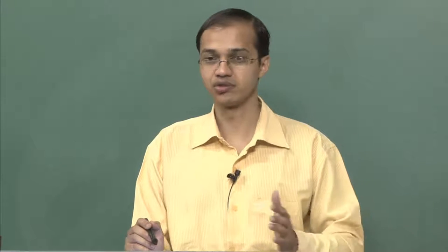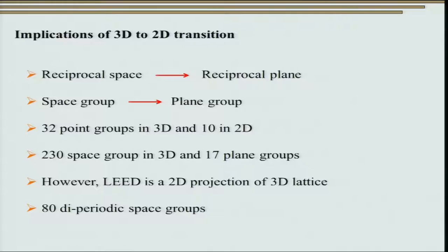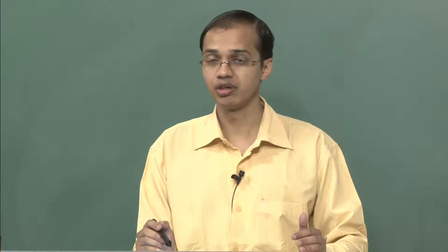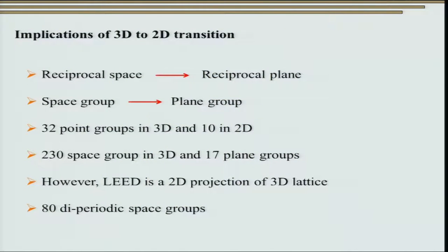Once you move from 3D structures to 2D surfaces, the reciprocal space essentially transforms to something like a reciprocal plane. Instead of having a space group, we have a plane group. We are aware that there are 32 point groups in 3D and 10 point groups in 2D. When talking about space groups, we have 230 space groups in 3D and 17 plane groups in 2D. The obvious question is: when we look at 2D patterns of films or islands on the surface, are we seeing the 2D structure? The answer is not entirely, because LEED is a two-dimensional projection of the 3D lattice.